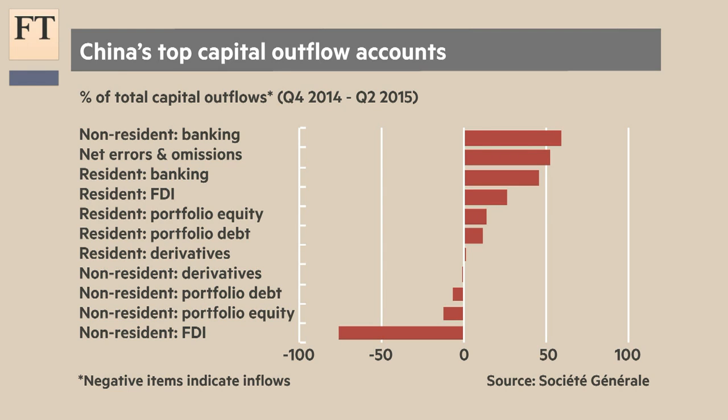I don't think the central bank is driving the process. My view is that the central bank would rather be responding to a process than driving one at this point in time. So if you imagine a scenario where you see more stress on the capital account, the PBOC will have a choice: either to intervene and run down reserves — and even though China's reserves are large, they're not large enough to do that on a big scale for a long time — or alternatively to let the currency go.